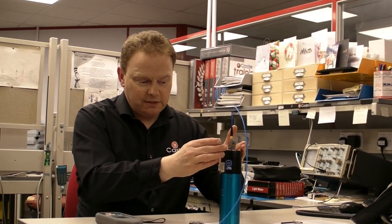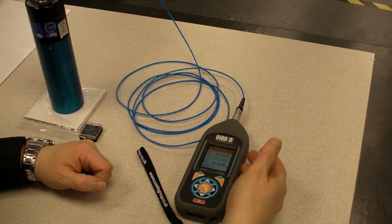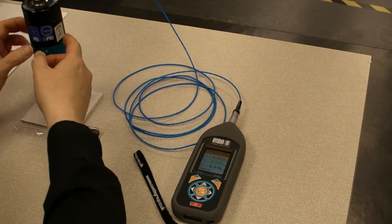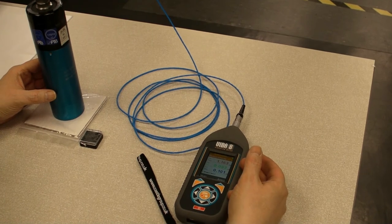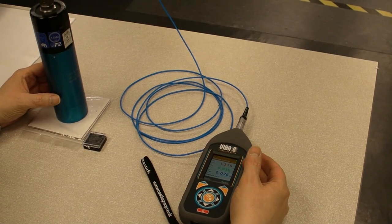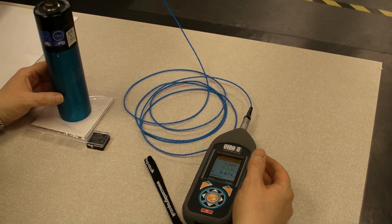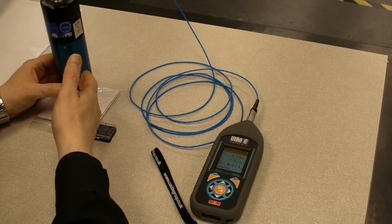So the accelerometer is now attached to the shaker and now we set the instrument into the calibration mode.